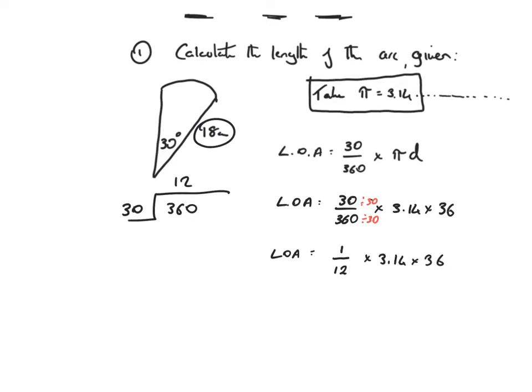Again, 3.14 times 36 is looking like quite a difficult calculation, but we don't need to do that. What we could do is get the 36 and divide that by the 12. So those would cancel out to give me 3. So now what I've got is 3.14 times 3. Line up the decimal point. 3 fours are 12, 2 down carry 1. 3 ones are 3 plus 1 is 4. 3 threes are 9. The final answer then is 9.42 centimeters.